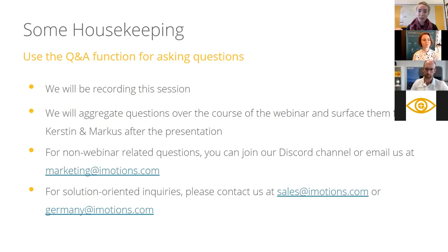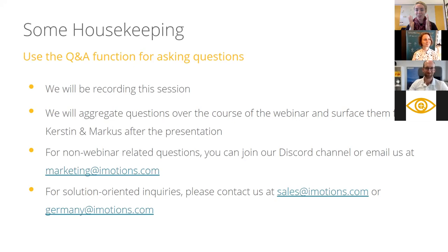You can also join our Discord channel for asynchronous messaging. If you want to contact us directly, you can email us at marketing@iMotions.com or sales@iMotions.com. Please use the Q&A function to type your questions — there's just a box that says Q&A. Thank you for joining, and I'm passing it over to our presenters.